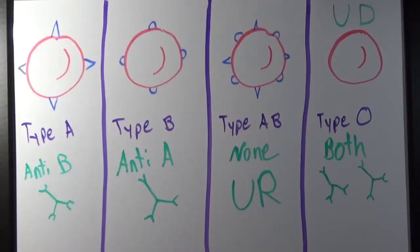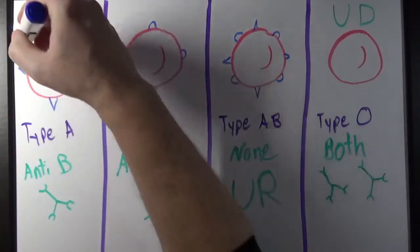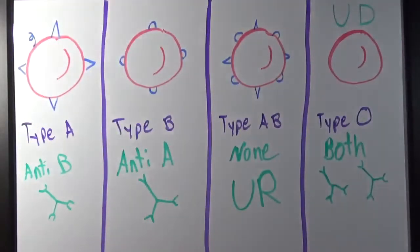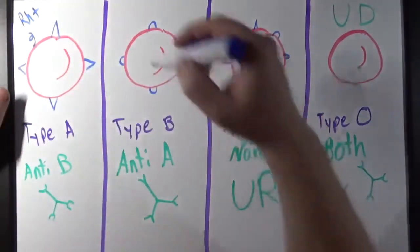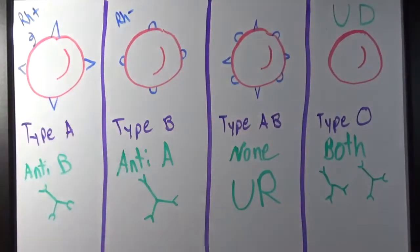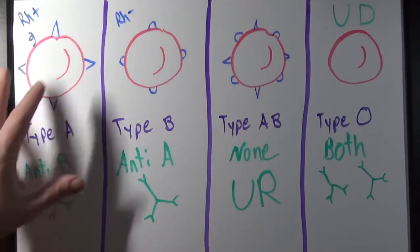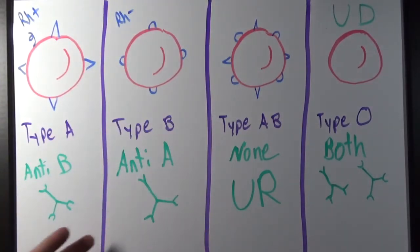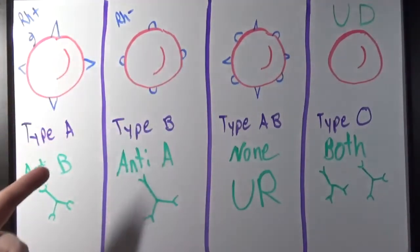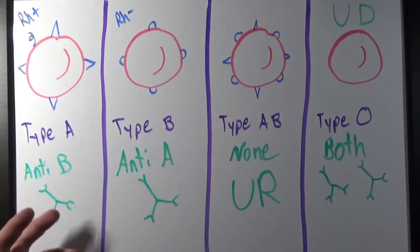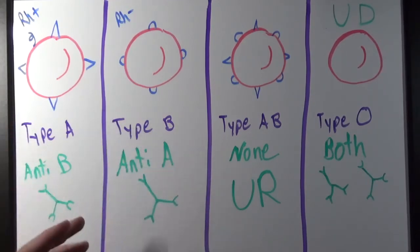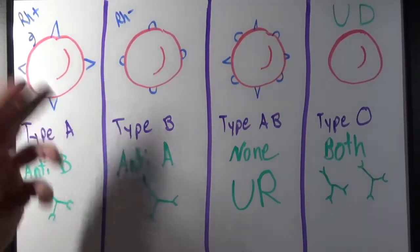Some of you might be asking: what about the Rh factor? The Rh factor is another surface antigen — we can represent it as a little squiggle. If you have the Rh surface antigen, then you're Rh positive; if you don't, then you're Rh negative. Normally, people don't have any anti-Rh antibodies in their plasma, even if they're Rh negative. The only way they would get anti-Rh antibodies would be if they were exposed to blood that had the Rh factor — someone with Rh positive blood.